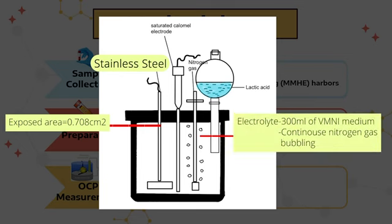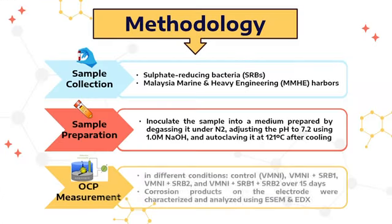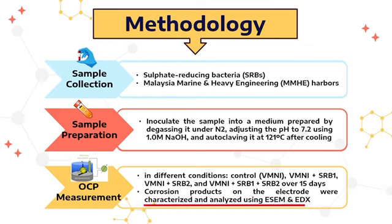The electrolyte used was 300 milliliters of VMNI medium, and anaerobic conditions were maintained by continuous nitrogen gas bubbling. The corrosion products on the electrode were analyzed using environmental scanning electron microscope (ESEM) and energy dispersive analysis X-ray (EDX).